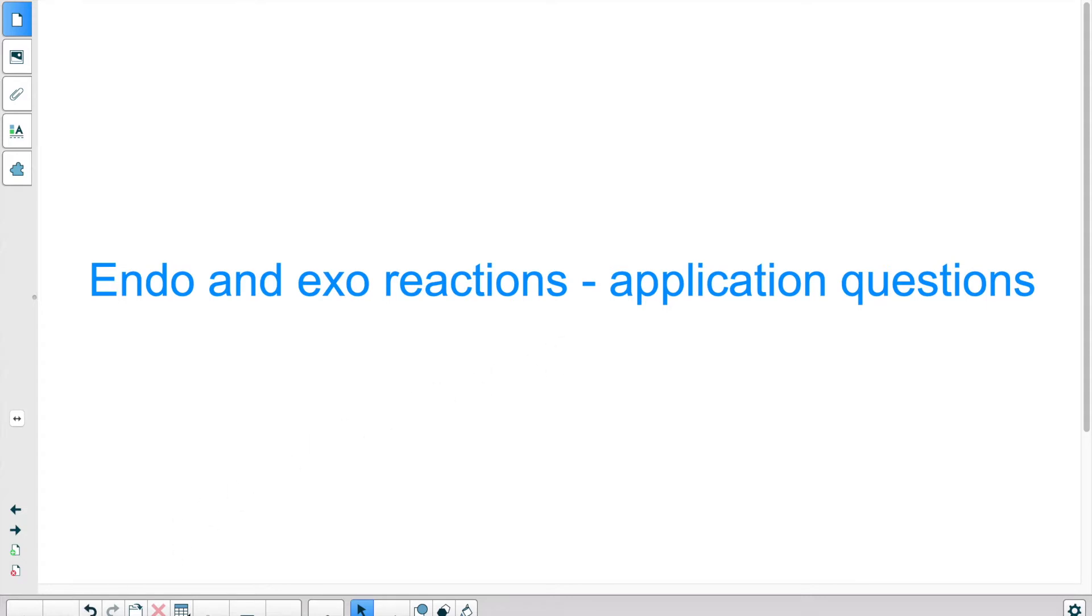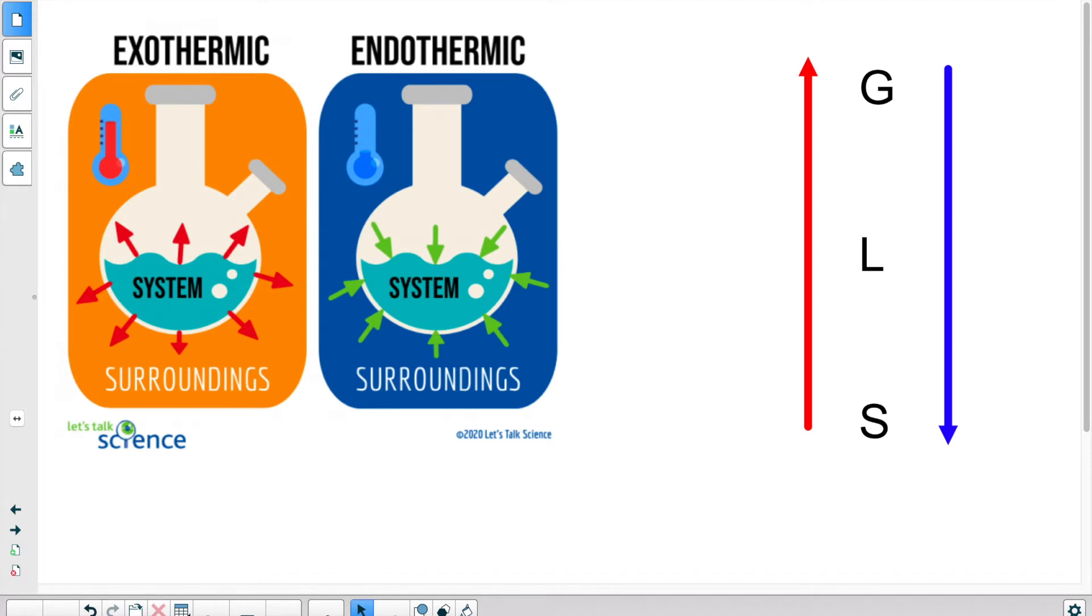Before we look at practice questions, a very quick recap. We have endothermic and exothermic reactions. We normally look at a system. The system is either the substance that's being looked at or the reaction. Now, it's very difficult to put a thermometer inside a system, so what we do instead is measure the temperature of the surroundings, of the environment around the system. By picking up a change of temperature, we can then determine what the system did.